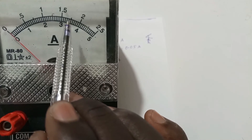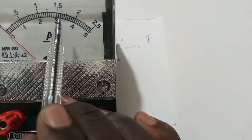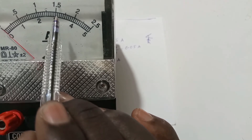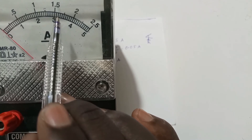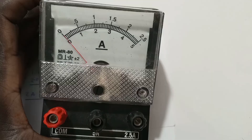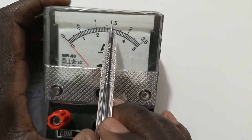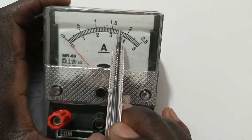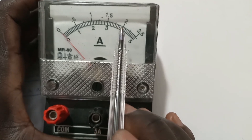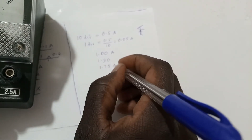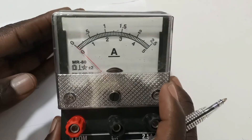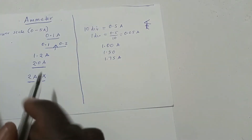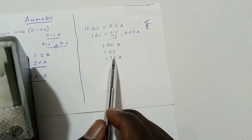Each small division on the upper scale is 0.05 amps. So from 1.5, adding two divisions gives 1.60, and the next two divisions give 1.70. A particular point could read 1.75 amps. It therefore means that when using this instrument you are allowed to give your answers either to one decimal place or to two decimal places — and this ambiguity is a disadvantage of using analog meters.